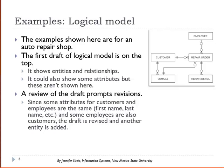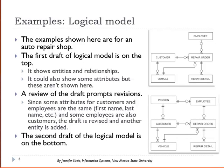However, a review of the draft prompts revisions. Since some attributes for customers and employees are the same and some employees are also customers, this draft has been revised and another entity added. So our second draft, what we have done is combined the common attributes of employee and customer into an entity called person. And then we have specific attributes for employees and specific attributes for customers.